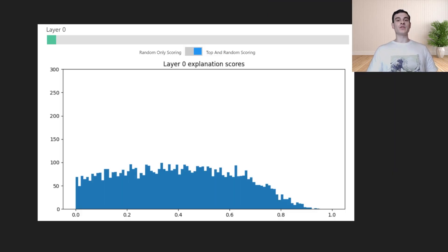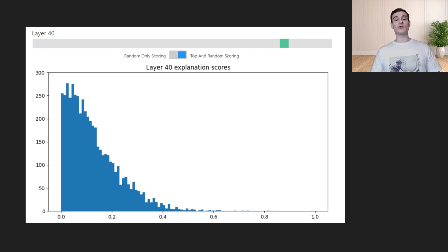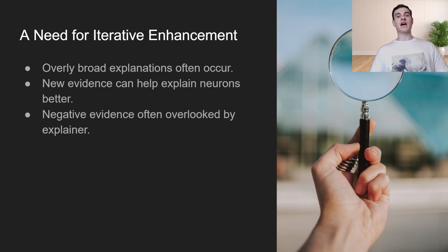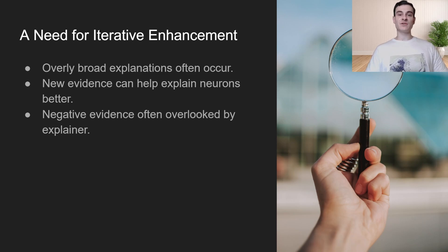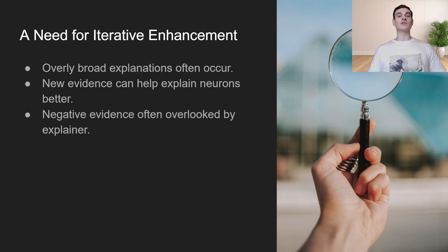Here's a graph for the correlation scores of all the neurons for the first layer. As we can see, there are some neurons that are very well explained by using this hypothesis method, but also a significant amount that aren't that well explained. For layer 40, the deeper we go into the neural network, the less this technique works for explaining neuron behavior. The explanations coming out of the hypothesis model are too generalized — they may work well on the neuron's top activating sequences, but when applied to random sequences, performance quickly goes down. Additionally, the explainer model frequently overlooks negative evidence. So what if there was a way to bring in new evidence to target the specific weak points of the hypothesis?